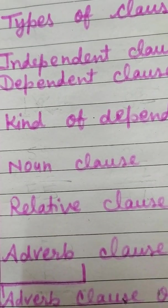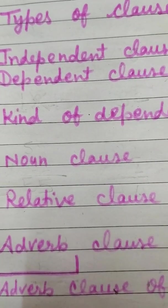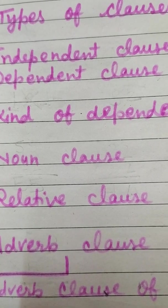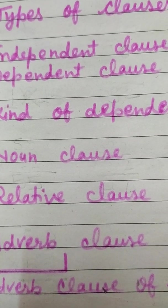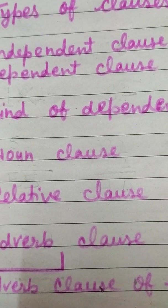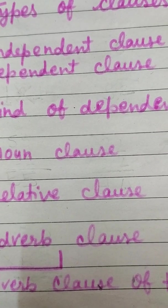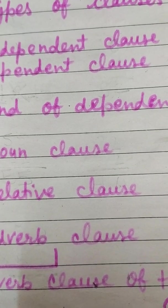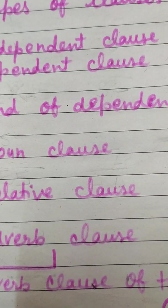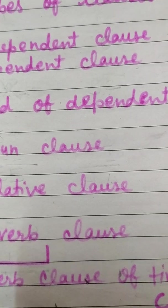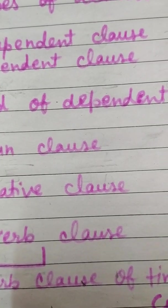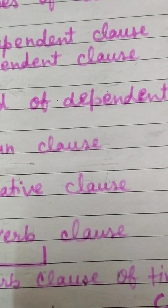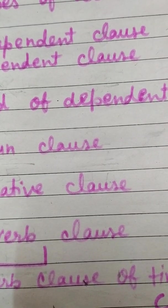The second type is relative clause, also known as adjective clause. It describes a noun or a pronoun and adds extra information to a sentence by defining a noun. It starts with words like who, whose, whom, that, which, whichever, whoever, or of which.